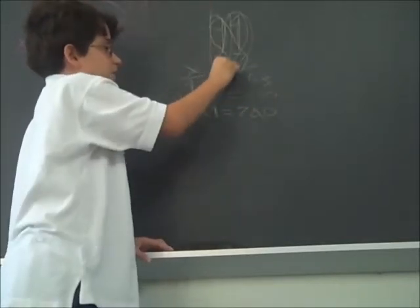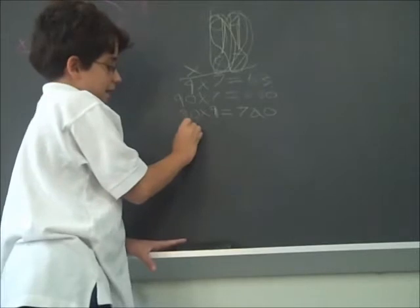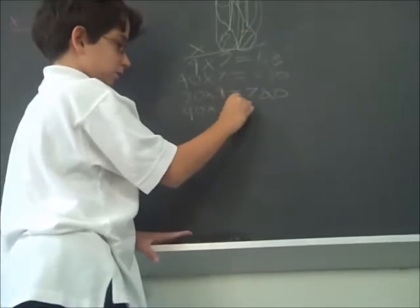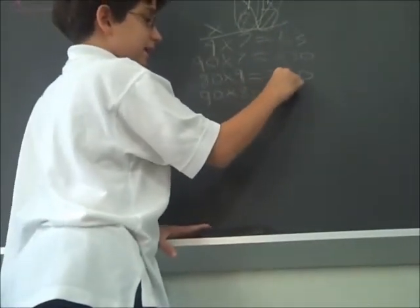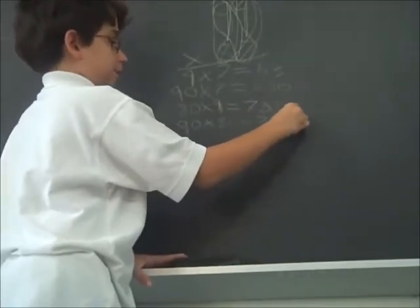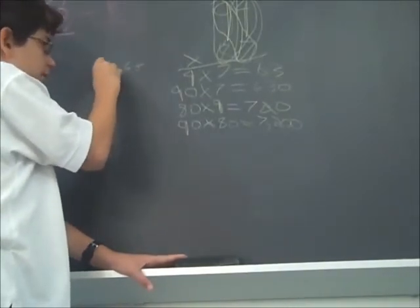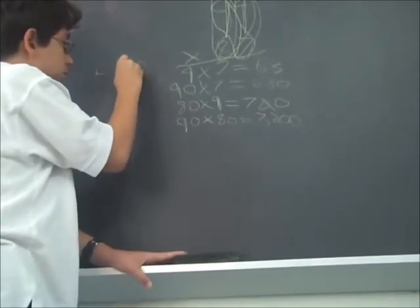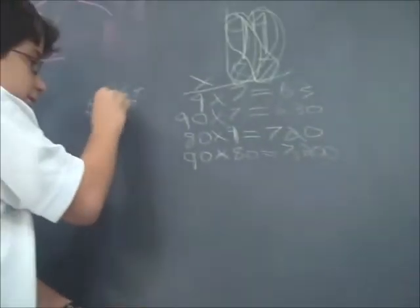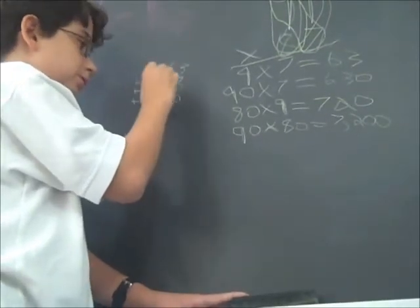And then we do 9 and 8, but the 9 and 8 are in the tens place. So it's 90 and 80. So, 90 times 80 equals 7,200. Then we add all of them up. Sixty-three.